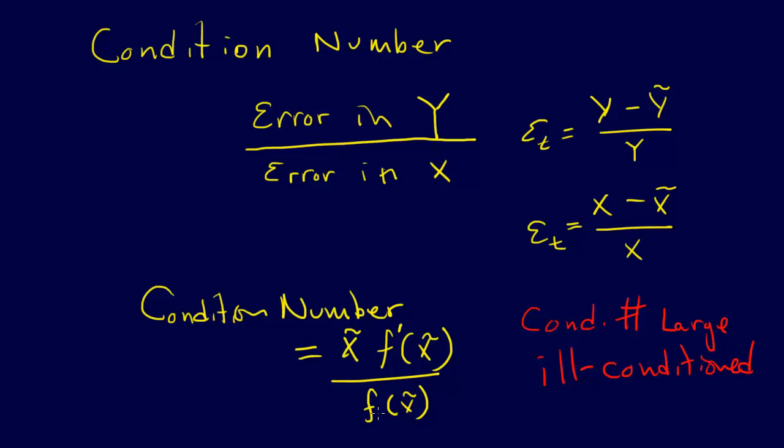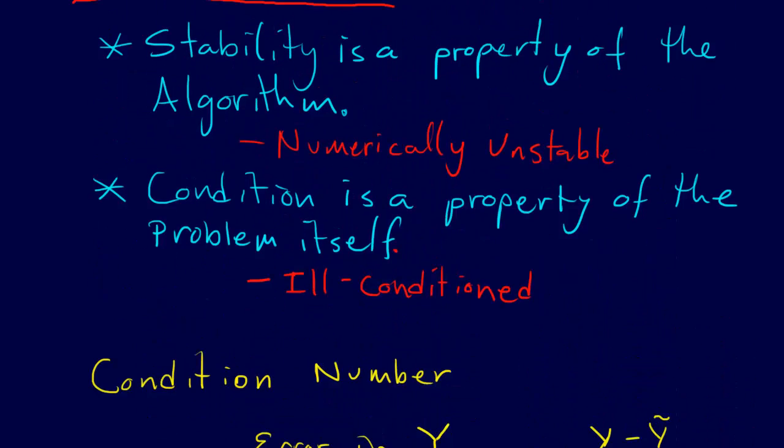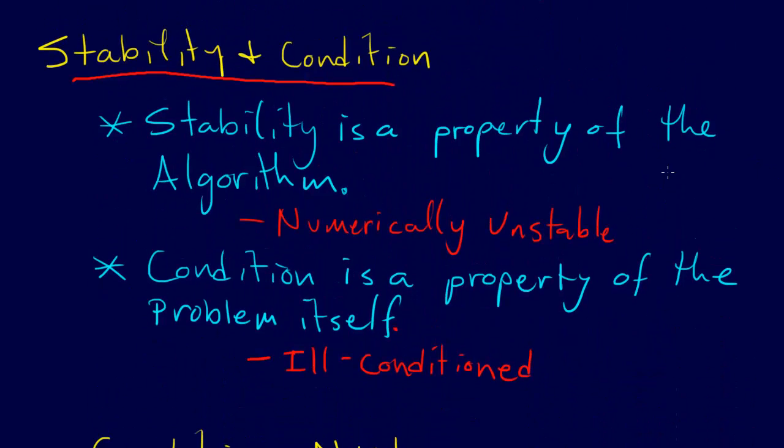So we want this number to be as small as possible. And it doesn't have to be super small, but obviously the smaller it is, the better conditioned the problem that we have. Again, emphasizing the main point here, stability is a property of the algorithm, and condition is a property of the problem itself.